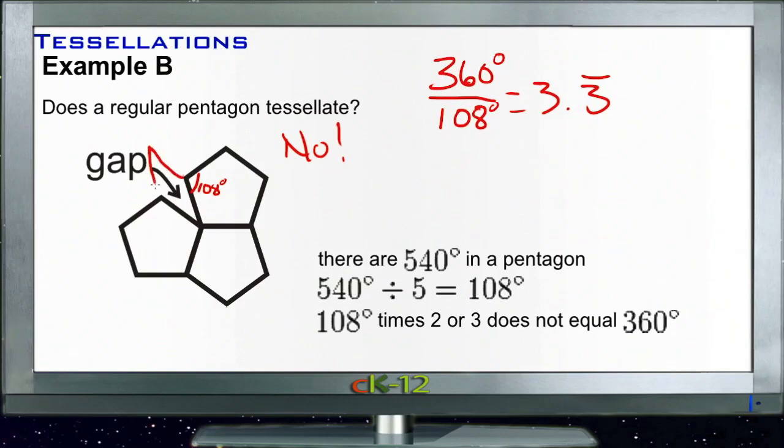We could do a tessellation with pentagons and diamonds together, and then draw more pentagons around with another diamond here. We could do that—we just can't do it with just the pentagons alone.